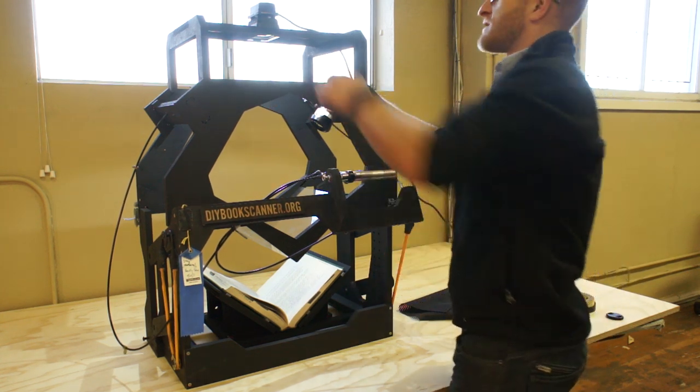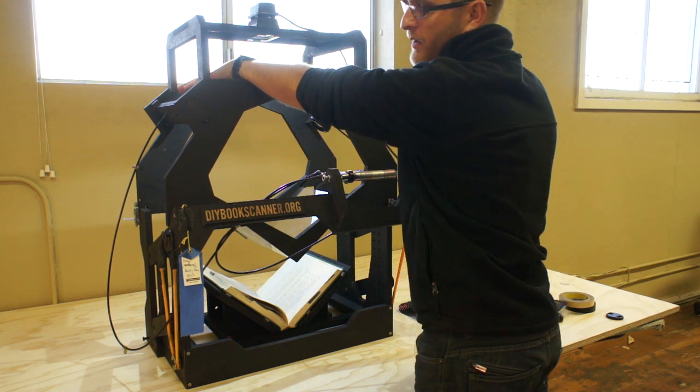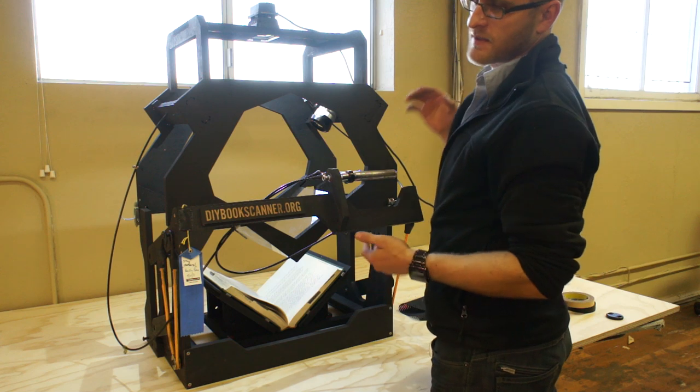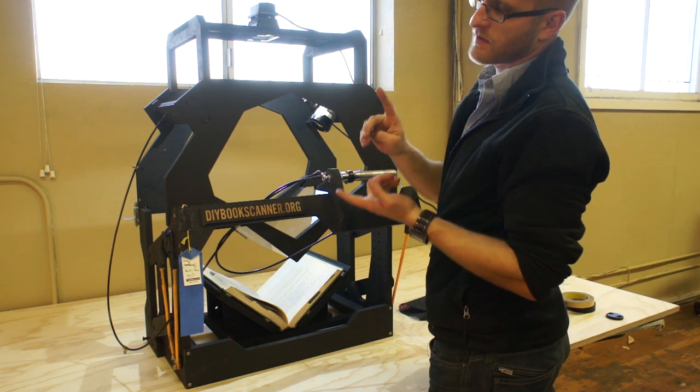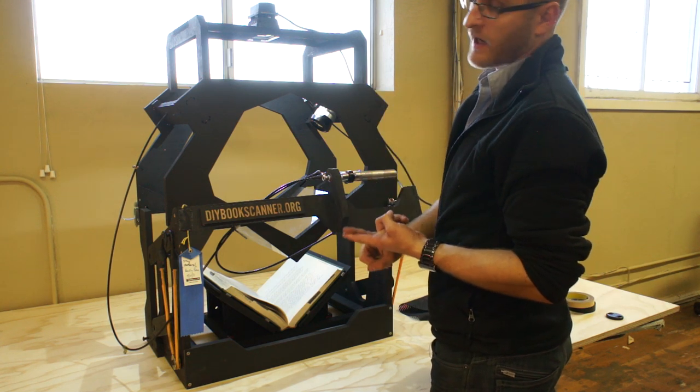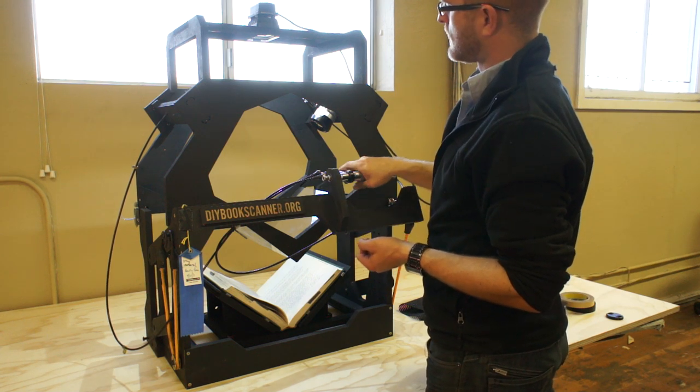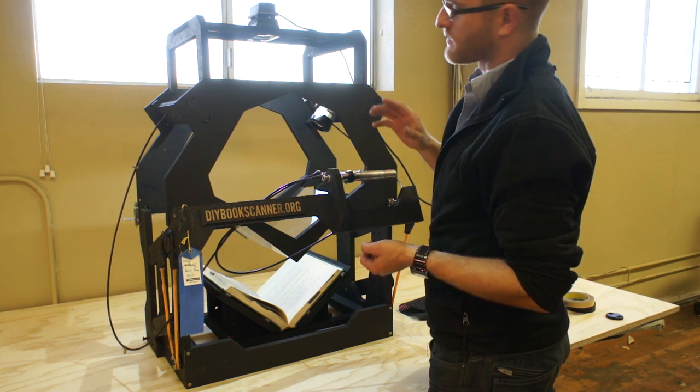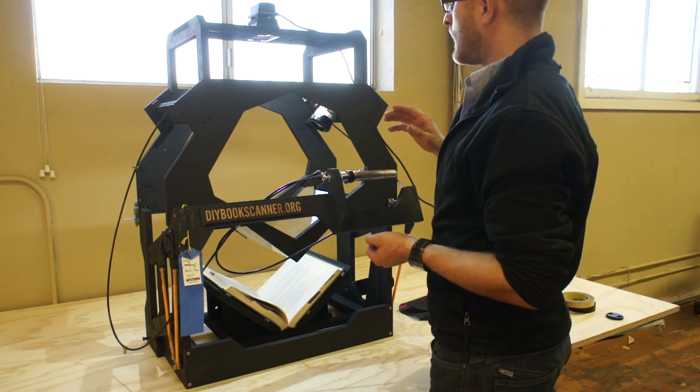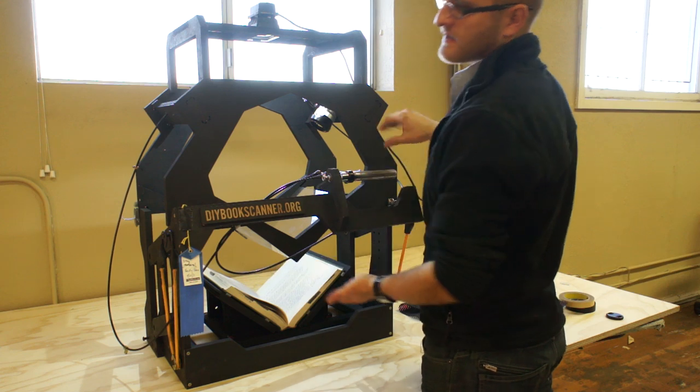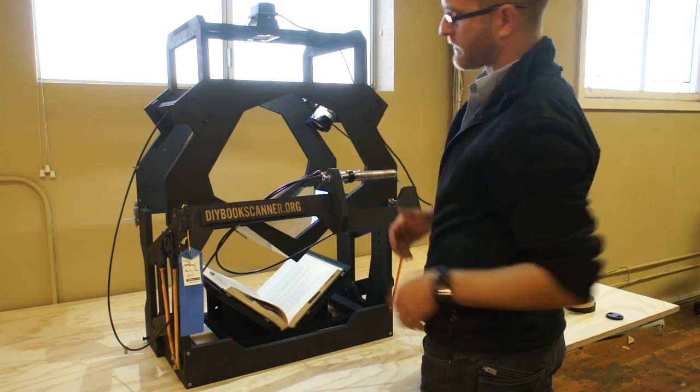The capture module simply has two cameras. I only have one mounted because I'm videoing with the other. Some kind of trigger mechanism, three possible trigger mechanisms. There's a shutter release from the manufacturer, there's a remote control, or there's the mechanical bike brake method, which is what I'll be using.